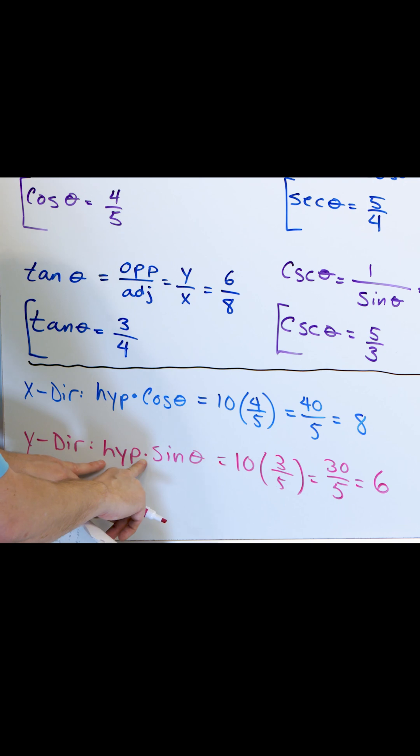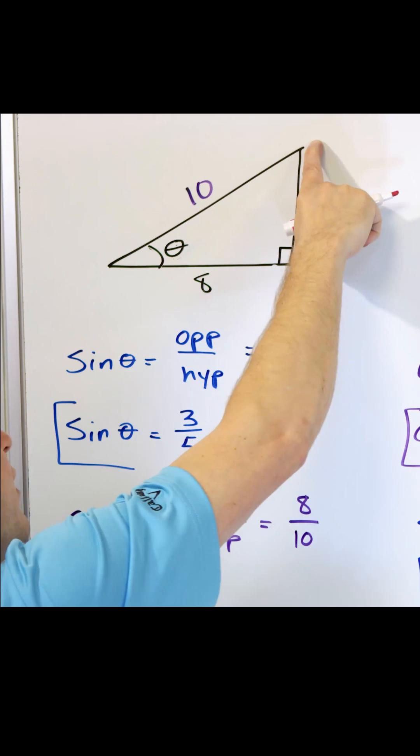So when I take the hypotenuse and I'm multiplying by the chopping factor in the y direction, I get an answer of six, which is the side of the triangle here.